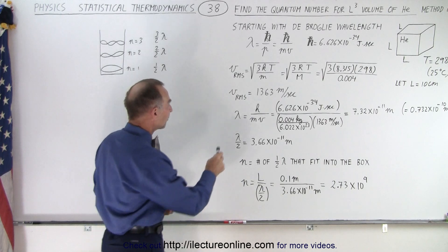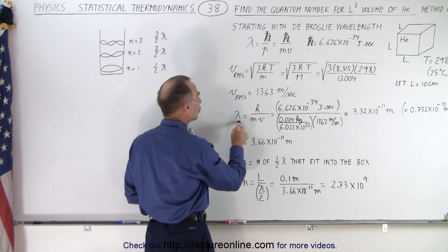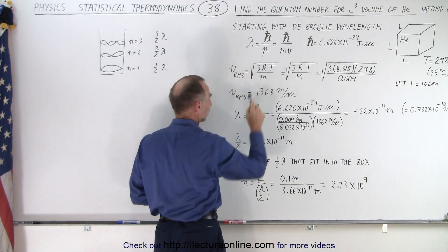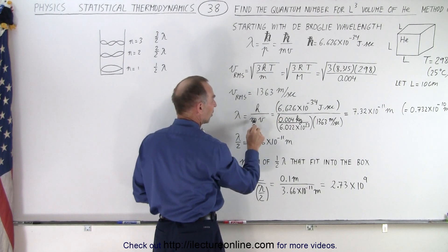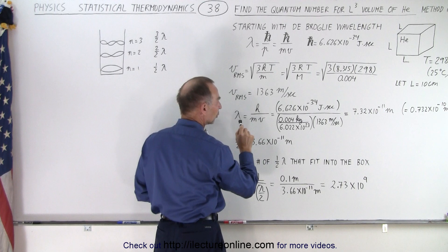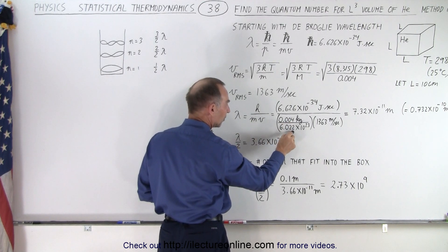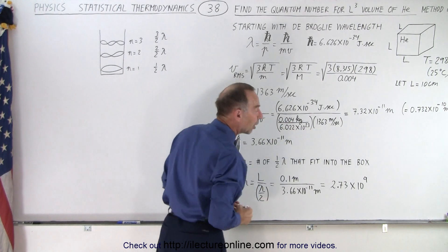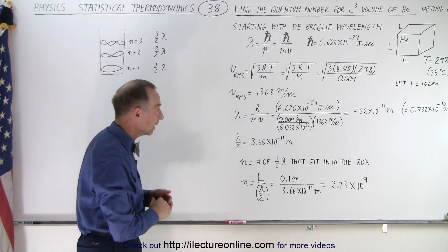Alright, now that we have the velocity, we can go back to the equation for the de Broglie wavelength we had over here. Planck's constant, the mass for a single molecule. So it would be the molar mass divided by Avogadro's number, and then the velocity will use the RMS velocity.